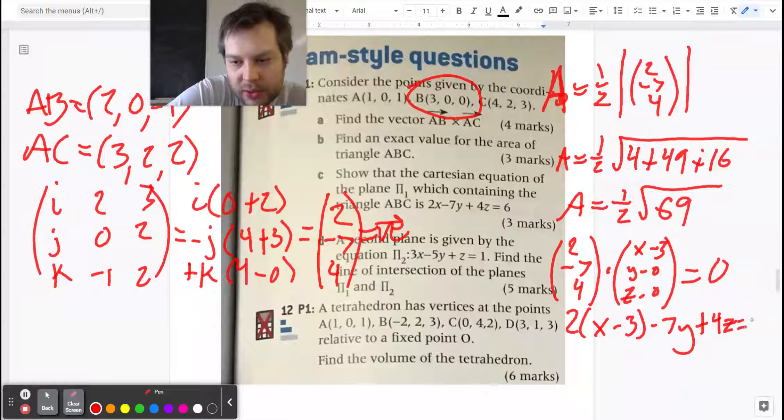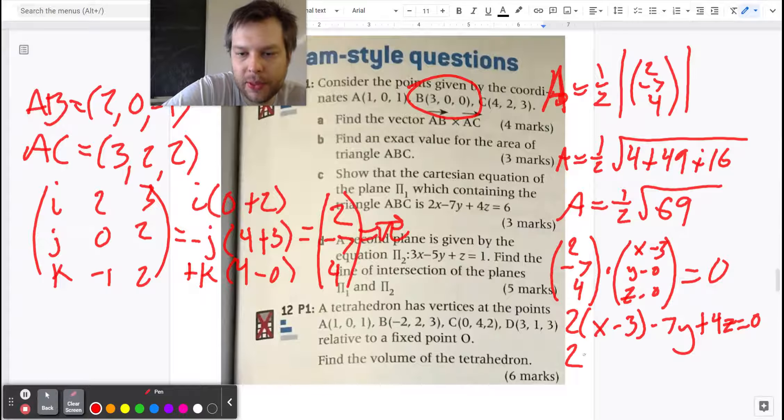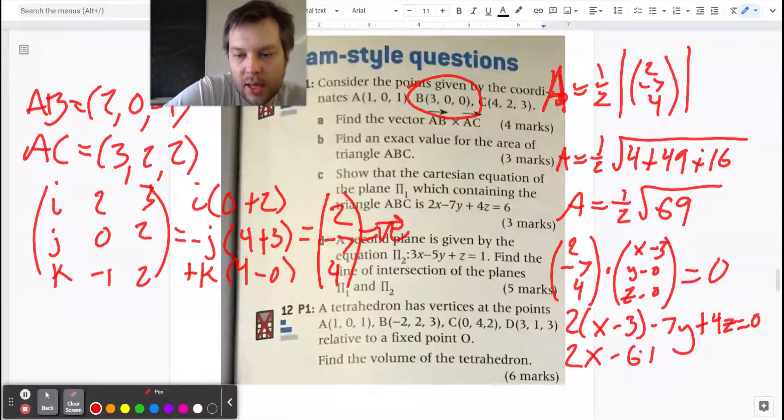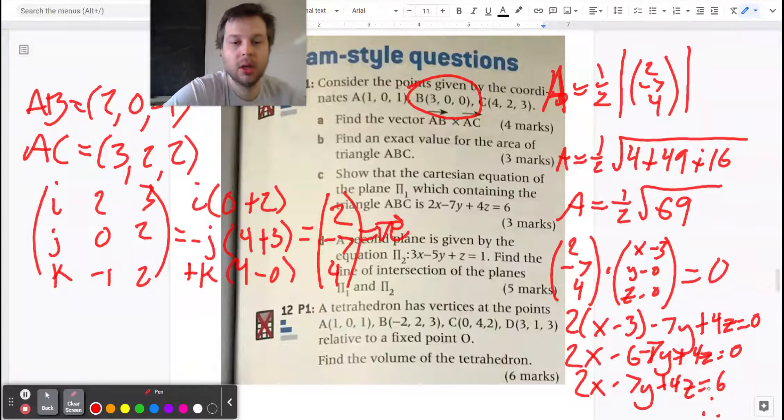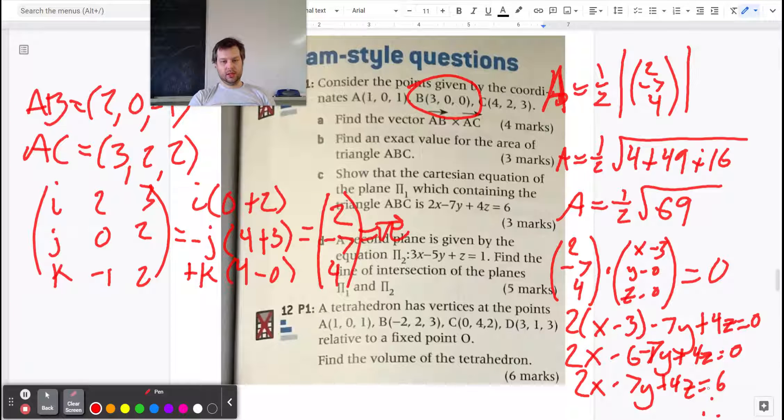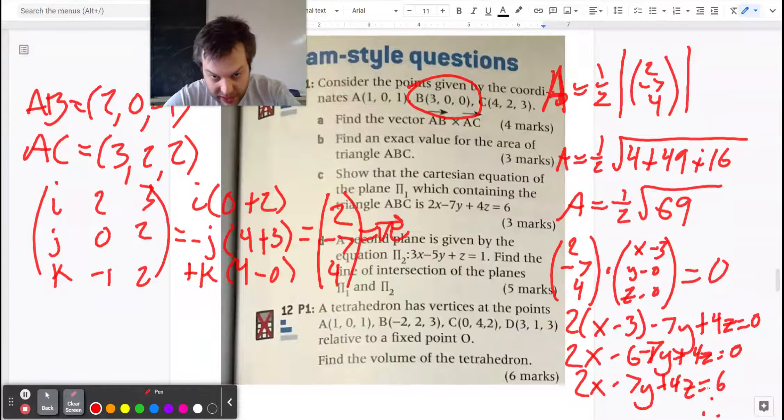Distribute the two and then just move the six to the other side and you have the equation of the plane that was requested. Great.